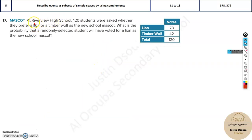At Riverview High School, 120 students were asked whether they prefer a lion or a timber wolf as the new school mascot. What is the probability that a randomly selected student voted for lion? They need a logo - it's either lion or timber wolf. The votes for lion are 78. They want to know if they choose a student at random, what's the probability that student had voted for lion.